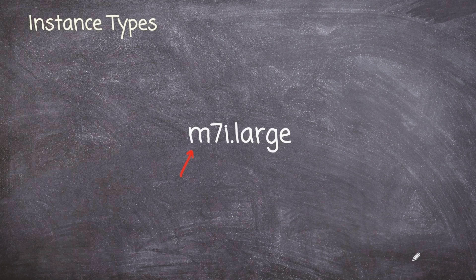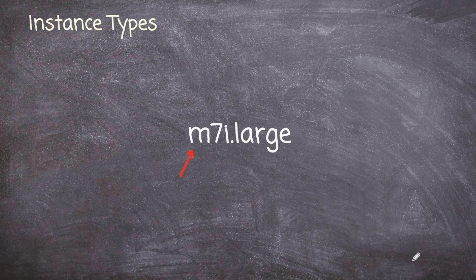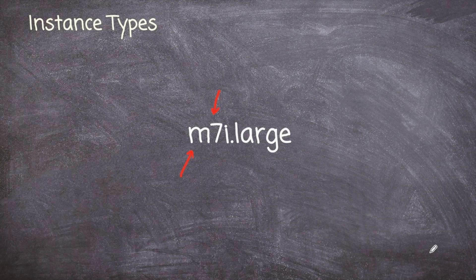The first letter generally represents what sort of specialization this instance type has. And we'll see some examples of some other letters that will lead off these instance types. But in this case, M represents general purpose. Now we have the seven here. Now that seven represents the seventh generation of this particular instance types.